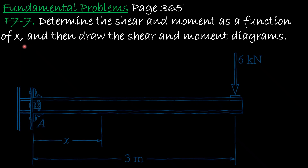After we find the shear and moment as a function of the length of the beam, we need to draw the shear and moment diagrams. The purpose is to provide a graphical description of how the internal shear and moment vary throughout the length of the beam. To get these diagrams, we will use the method of sections to determine shear and moment as a function of x.